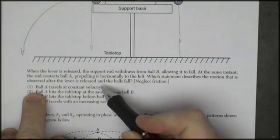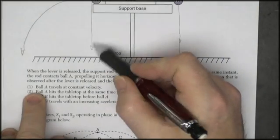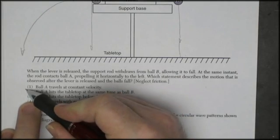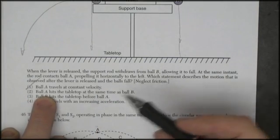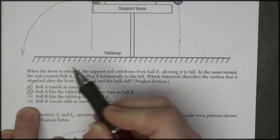Ball A travels at a constant velocity. Well no, it's going to go sideways at a constant velocity, but it will also start to accelerate downwards, so that's not true. Ball A hits the tabletop at the same time as ball B. That is the correct answer. That's what the whole thing is trying to show.